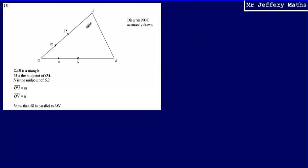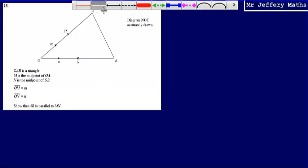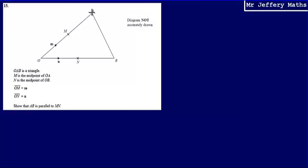This is question 15. We're told that OAB is a triangle, that M is the midpoint of OA, and that N is the midpoint of OB. We're then asked to show that AB — this length just here — is parallel to MN.